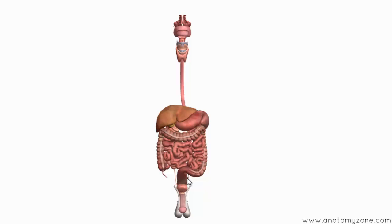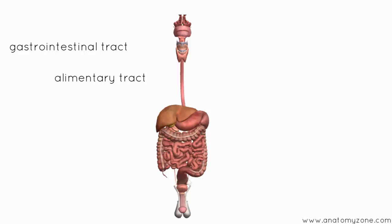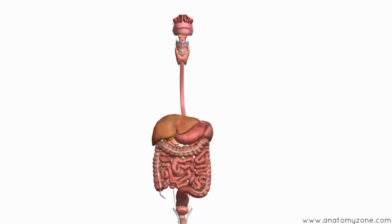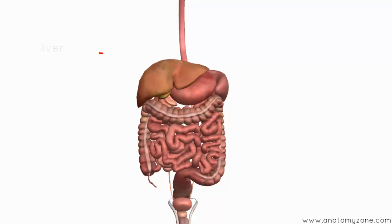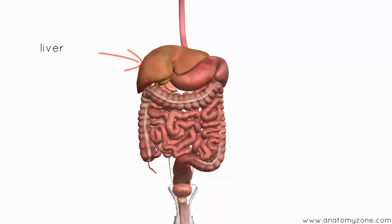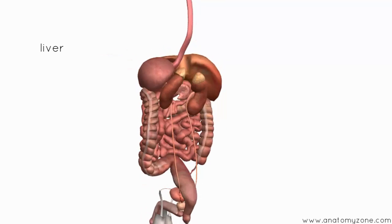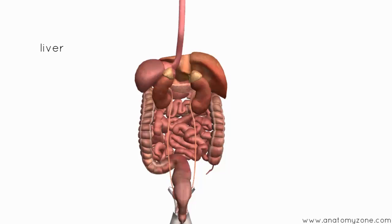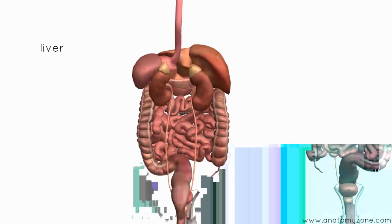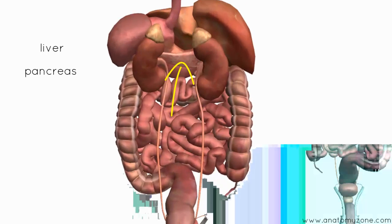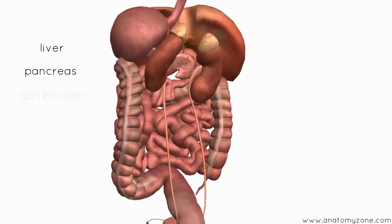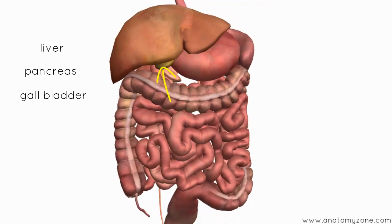As well as this long tube, which is referred to as the gastrointestinal tract or the alimentary tract, you've also got accessory organs of digestion. You can see these other organs coming off the side of the tract. This large one here is the liver. You've got the pancreas sitting behind the stomach and you've also got the gallbladder sitting behind the liver.